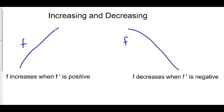How do we know if f is increasing or decreasing? Since it's going either up or down, we can determine this by looking at the slope. If f is going up, then the slope of f is positive. Another word for slope is the derivative, so we can say that f increases when f prime is positive. Furthermore, f decreases when the derivative f prime is negative.